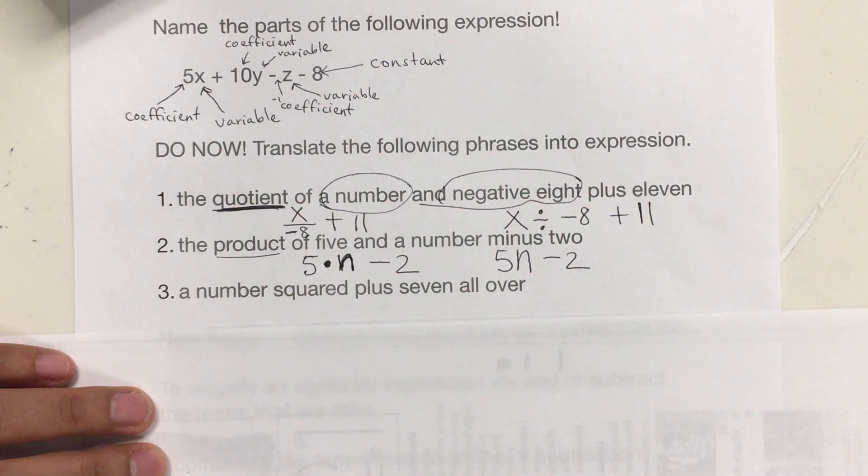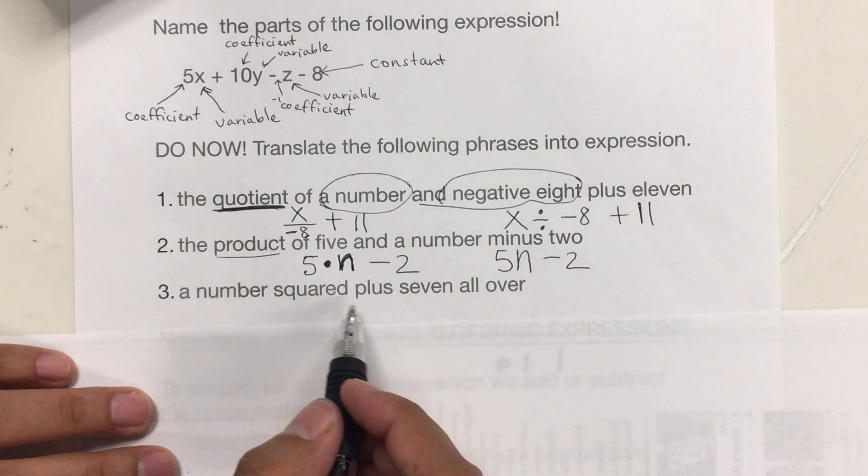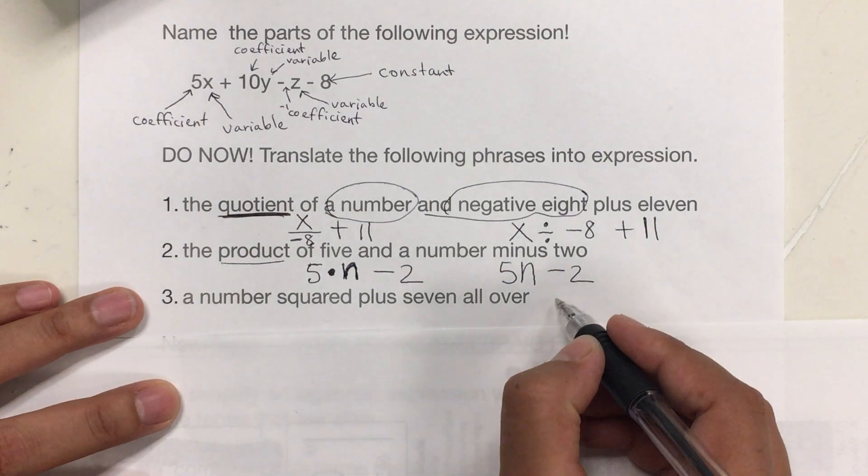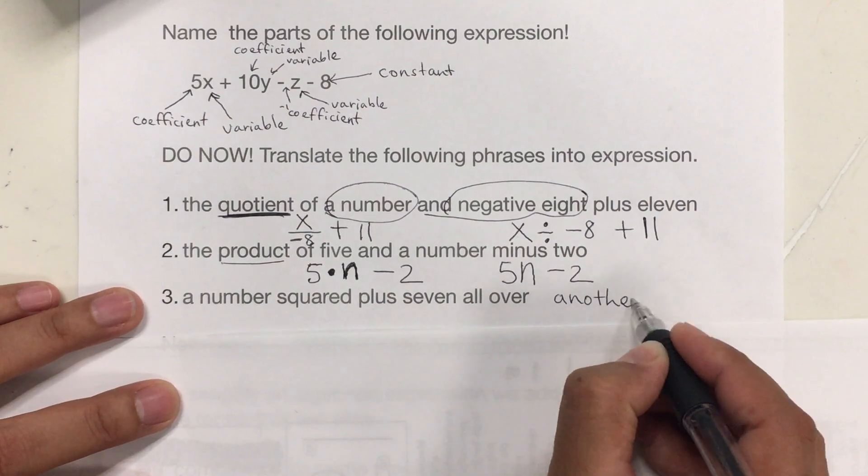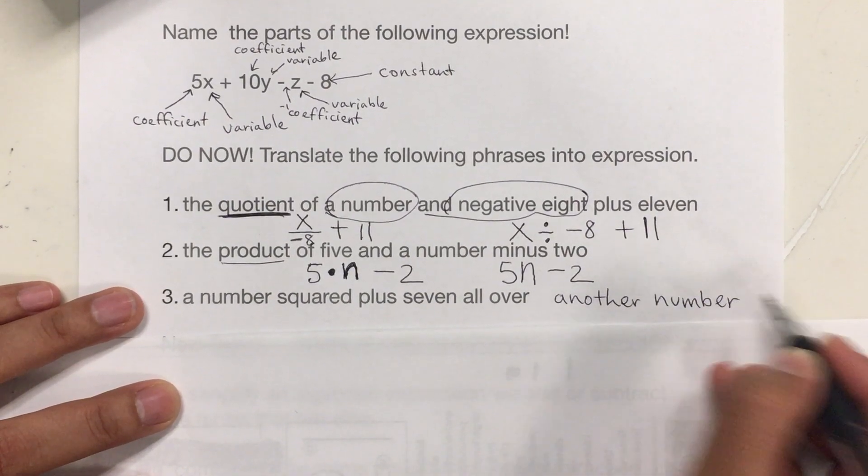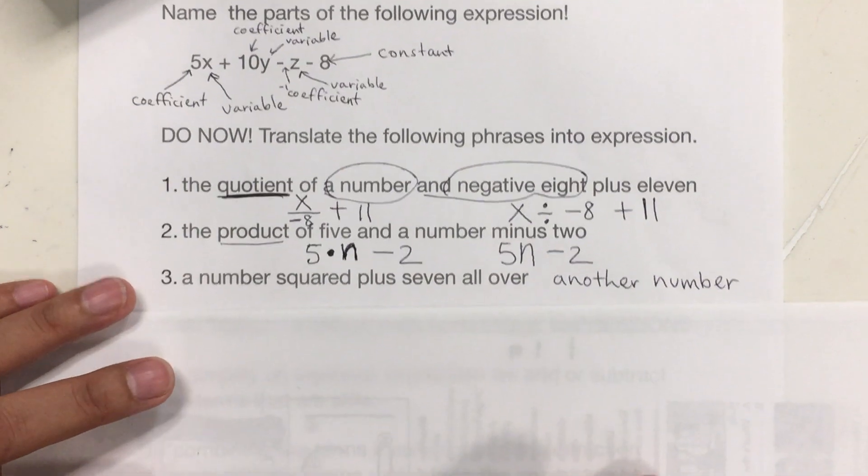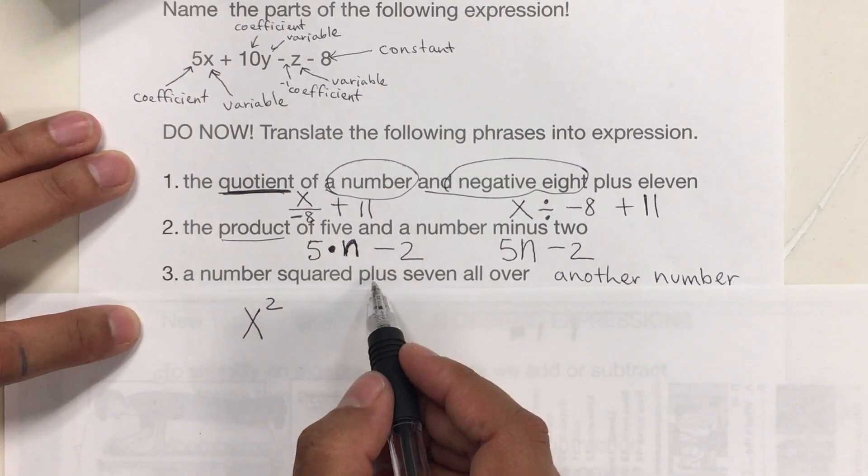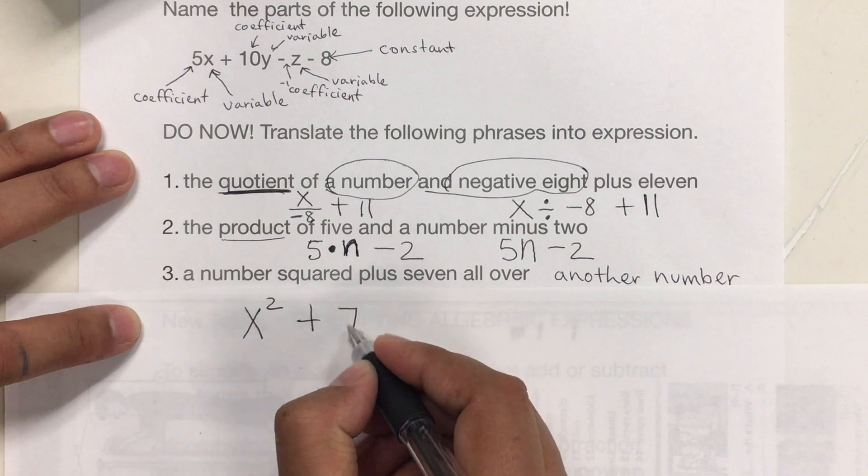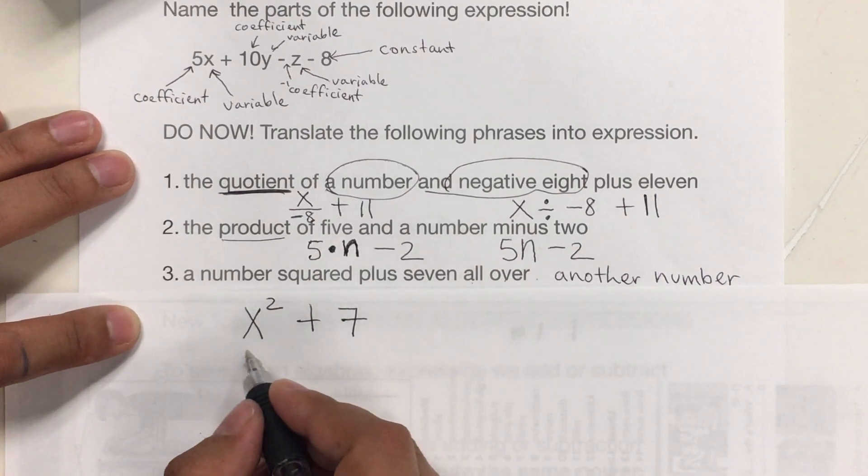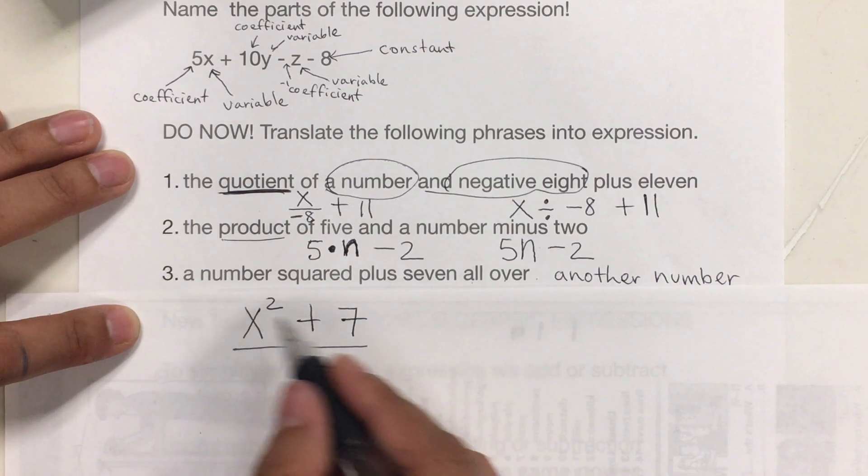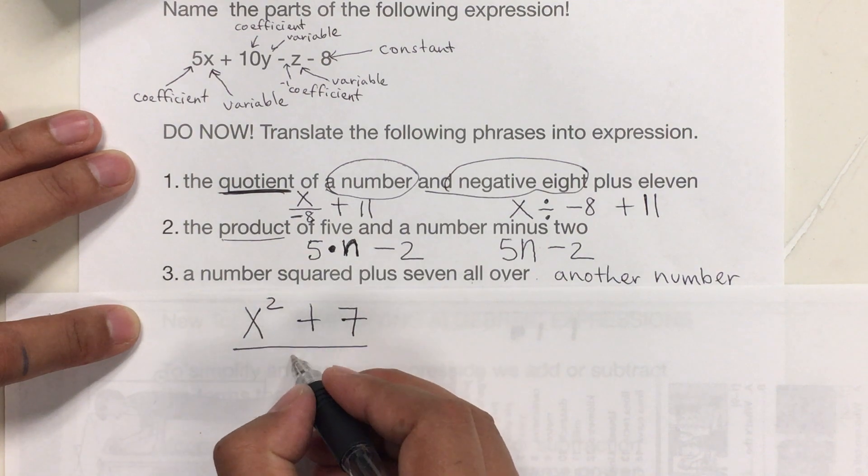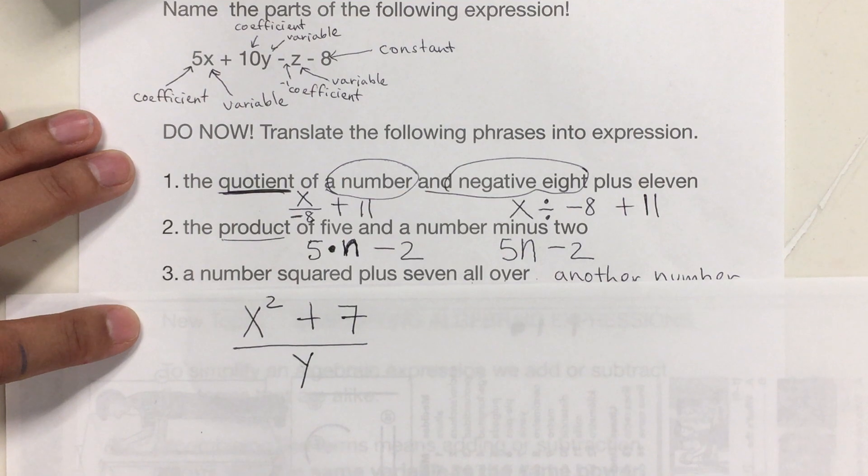So, number 3 says, a number squared plus 7 all over something. I guess I'll put another number here. So, a number squared. We don't know what number. We're just going to put x squared plus 7. And then it says, all over another number. So, all over means divided by or all of it over. And then it says, another number. So, we cannot use the same variable. It's going to be maybe y.